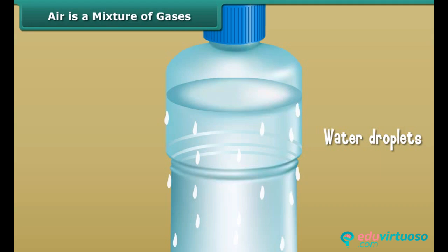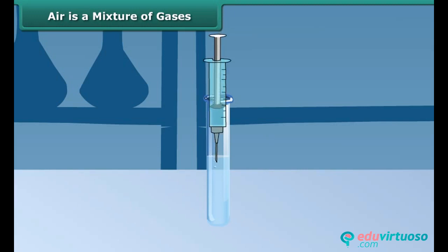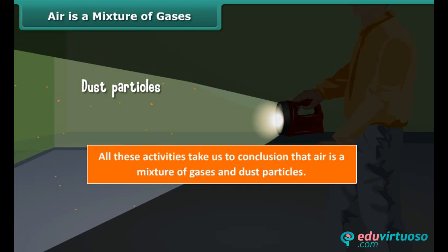This proves air contains water vapor. Now take lime water in a test tube. With a syringe, blow some air through this solution. You can see that lime water turns milky, indicating the presence of carbon dioxide in air. Put your torchlight on while walking through a dark place. You will see tiny shining particles moving in the beam of torchlight. These are the dust particles present in air. All these activities bring us to the conclusion that air is a mixture of gases and dust particles.